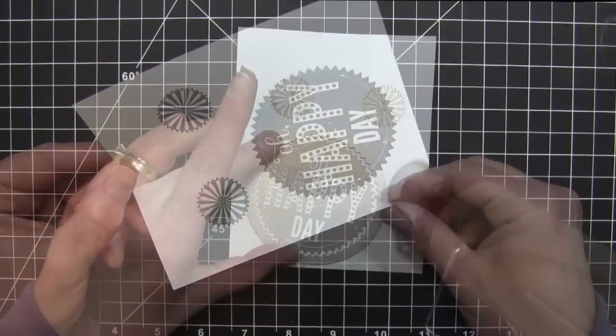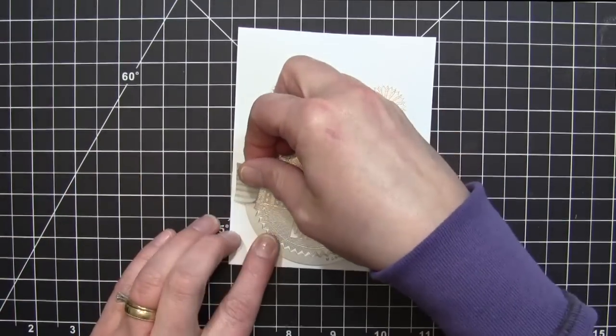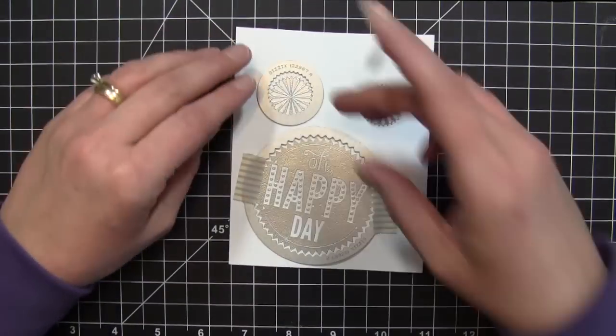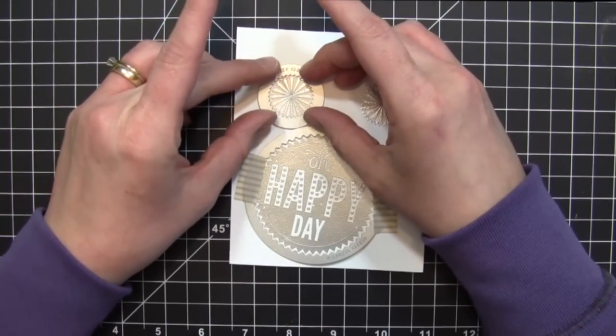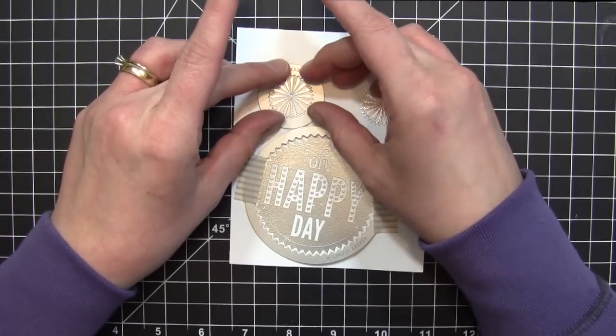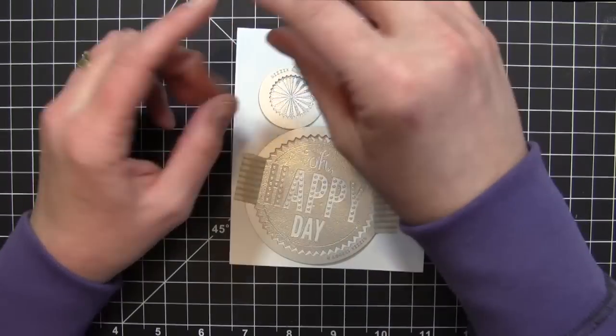Once that's all heat set, I'm using the coordinating dies that match the stamp set and sticking those down using some washi tape to hold them in place. You can also use the magnetic platform for this. I'll run those through my Big Shot and be back to start showing you my card base.